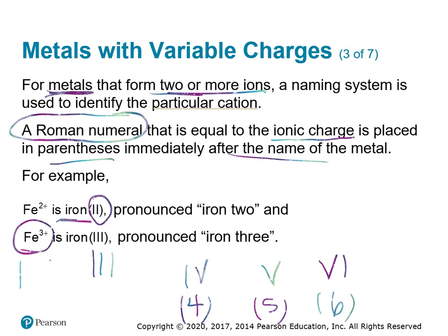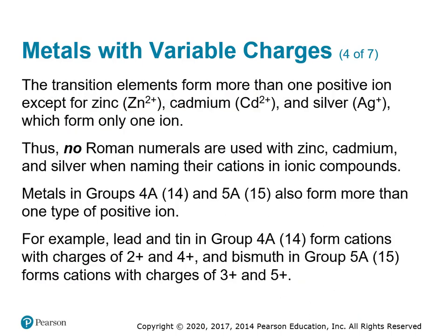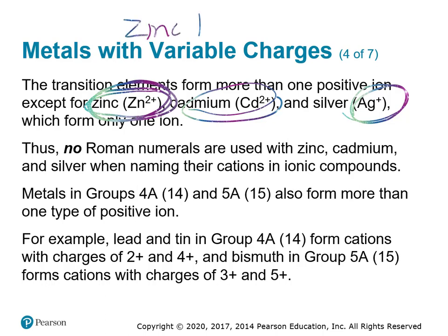Roman numeral 1 is just I, 2 is II, 3 is III, 4 is IV, 5 is V, and 6 is VI. The transition elements typically form more than one positive ion — except for the exceptions: zinc is always a plus 2 ion, cadmium is always plus 2, and silver is always Ag plus. They only form one ion, so we would not write zinc 2. No Roman numerals are used with those three when naming ionic compounds.